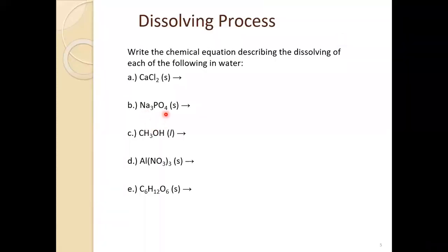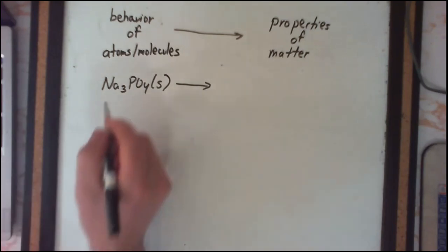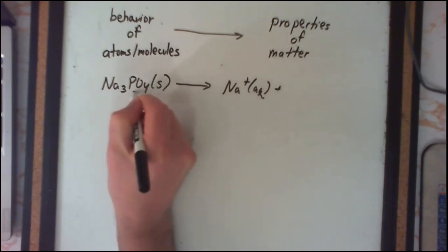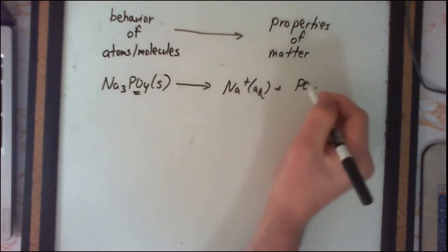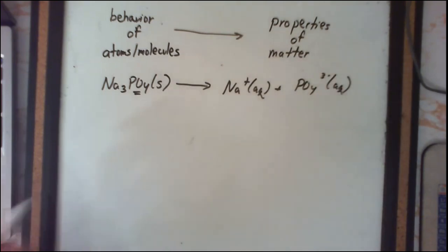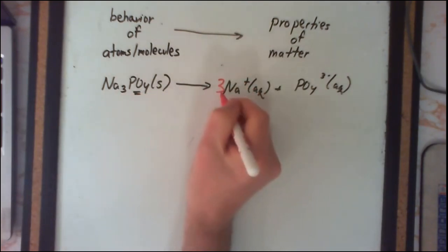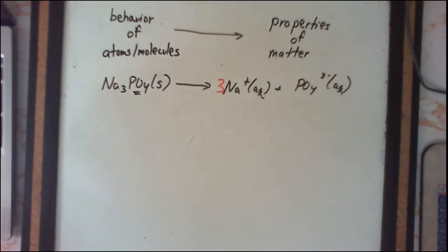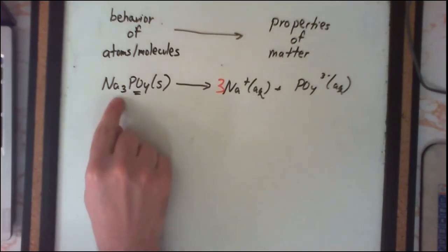The next example is sodium phosphate. It's ionic for two reasons: sodium is a metal, and PO4³⁻ is a polyatomic ion — both indicate an ionic compound. Because it's ionic, it breaks apart into its individual ions: three sodium ions (aqueous) and one phosphate ion (aqueous). The polyatomic phosphate ion stays together. So one sodium phosphate breaks up into three sodium ions and one phosphate ion — the best chemical equation to describe what actually occurs when solid sodium phosphate dissolves in water.